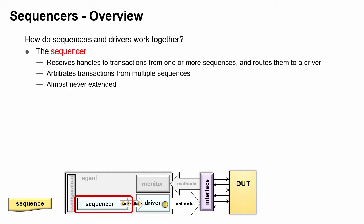The UVM sequencer class does its job so well that it's almost never extended. The class is parameterized and so needs to be specialized with the sequence item type.